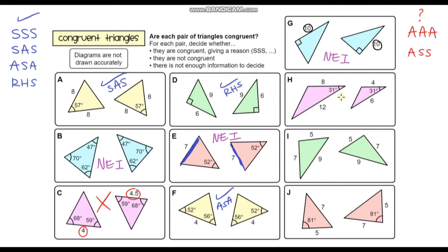For question H, straight away I can see that these are definitely not congruent because the side lengths are different. These two triangles are in fact similar — this one is just a scaled up version of the other — but they're definitely not congruent because the side lengths are different.